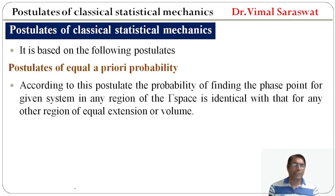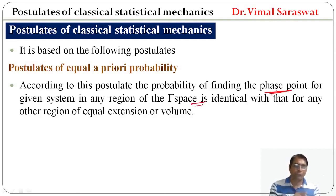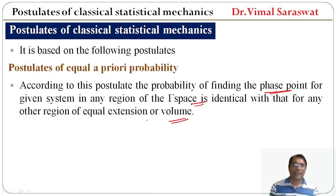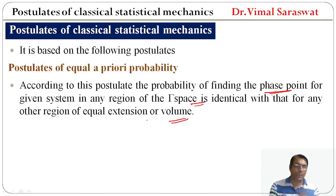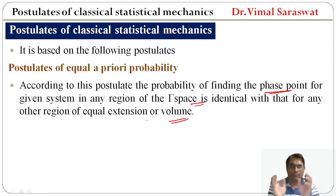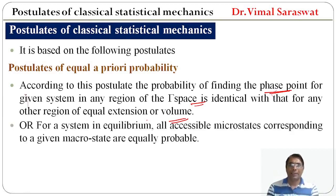According to this postulate, the probability of finding the phase point for a given system in any region of gamma space is identical with that for any other region of equal extension or volume. So if we have two portions in a system and the volume of both portions are the same, then the probability of finding the phase point in both portions of the system will be the same.